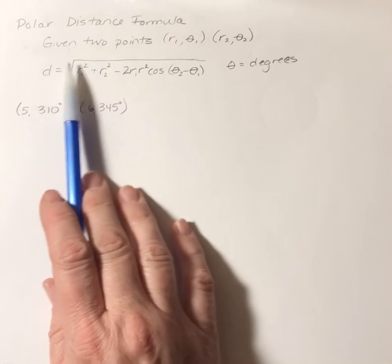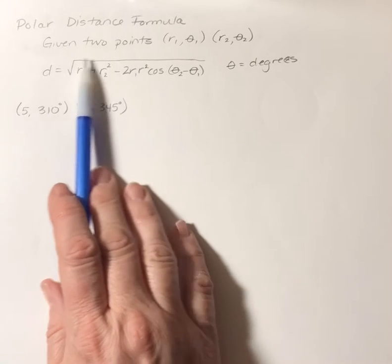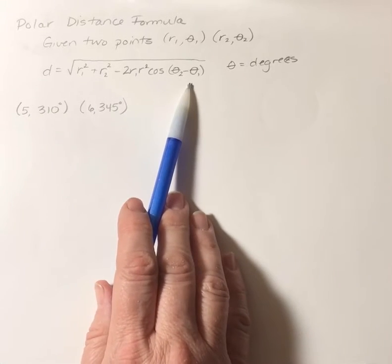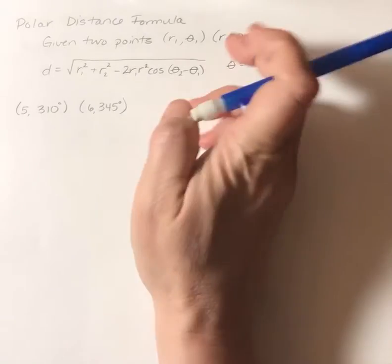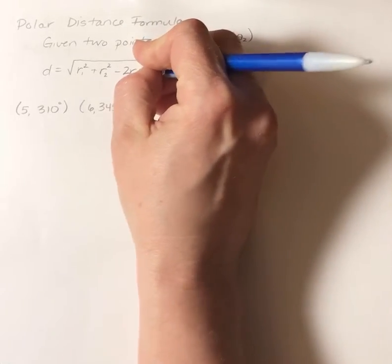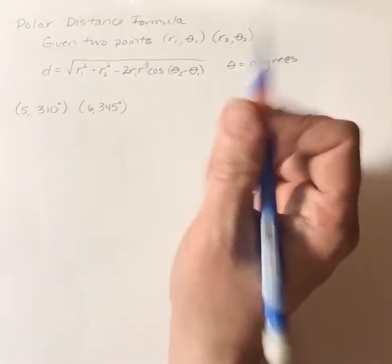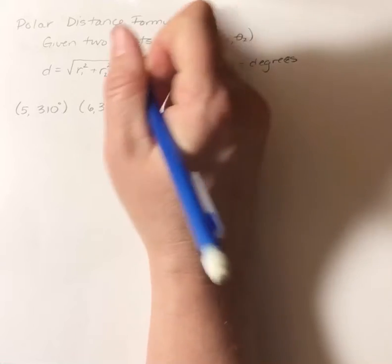And you may recognize this. This is basically from law of cosines is where this is from. And I just realized that this should be an r sub 2, not r squared. There we go.